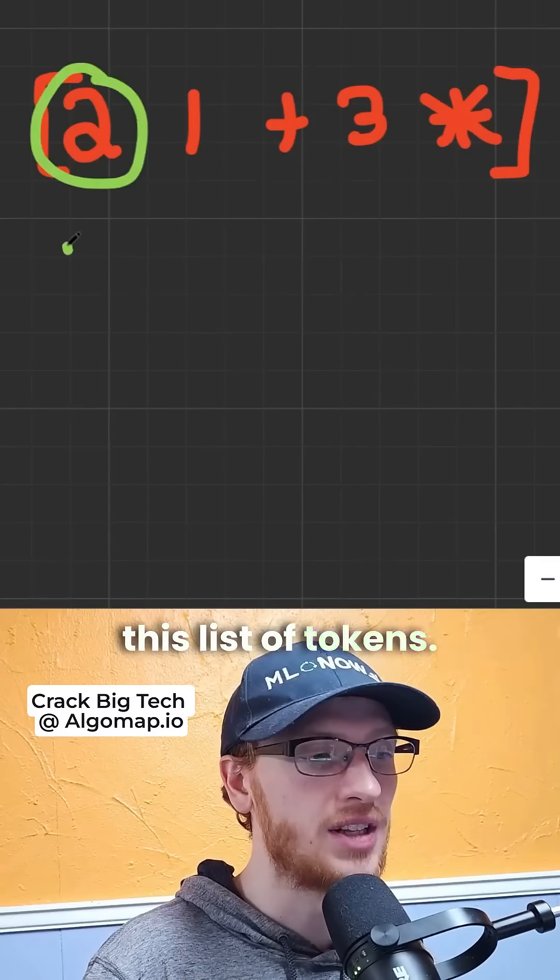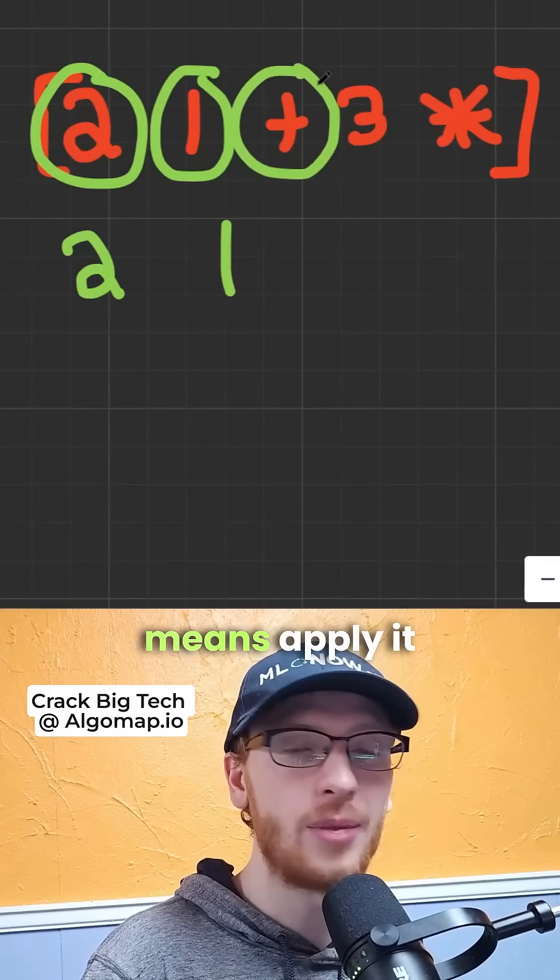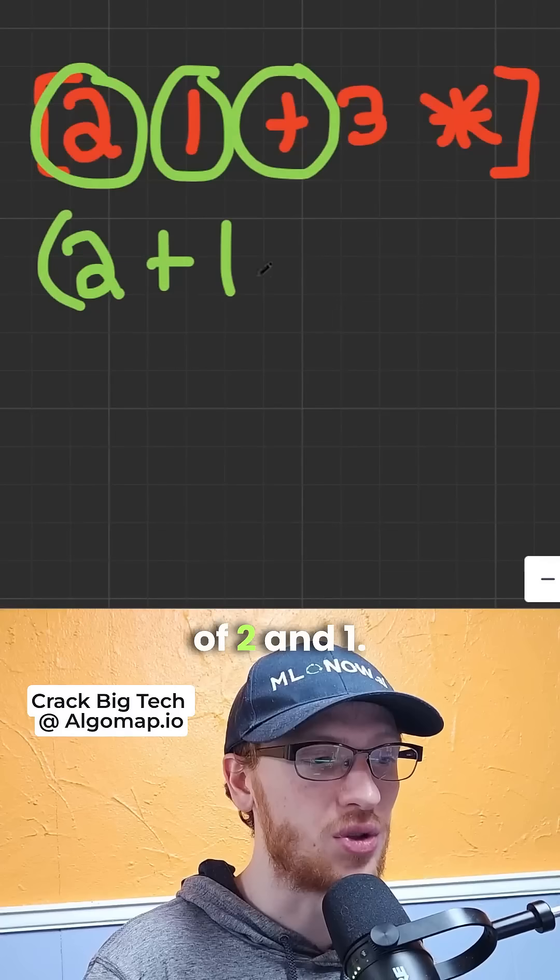Suppose we are given this list of tokens. That's just a number. Okay, that's another number. But when we hit an operation, that means apply it to the previous two values. So we have the addition of 2 and 1.